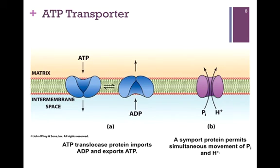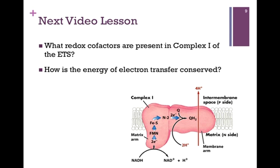We also need inorganic phosphate, and for that we have a symport protein highlighted here in purple. We have the simultaneous movement of inorganic phosphate with a proton. As we'll see, the electron transport chain allows us to generate the proton gradient, and we're using the energy of that gradient to move inorganic phosphate into the matrix. In our next video lesson, we want to examine more particularly complex one of the electron transport system and consider its redox cofactors, as well as how the energy of electron transfer is conserved.